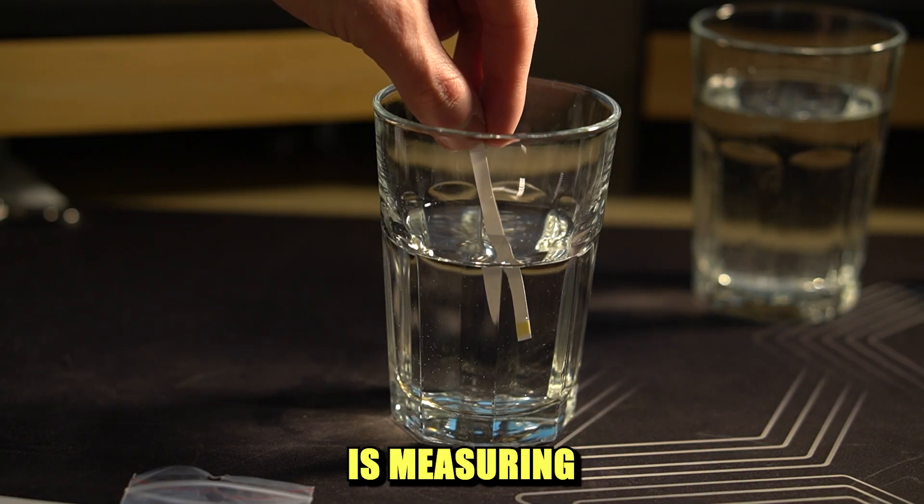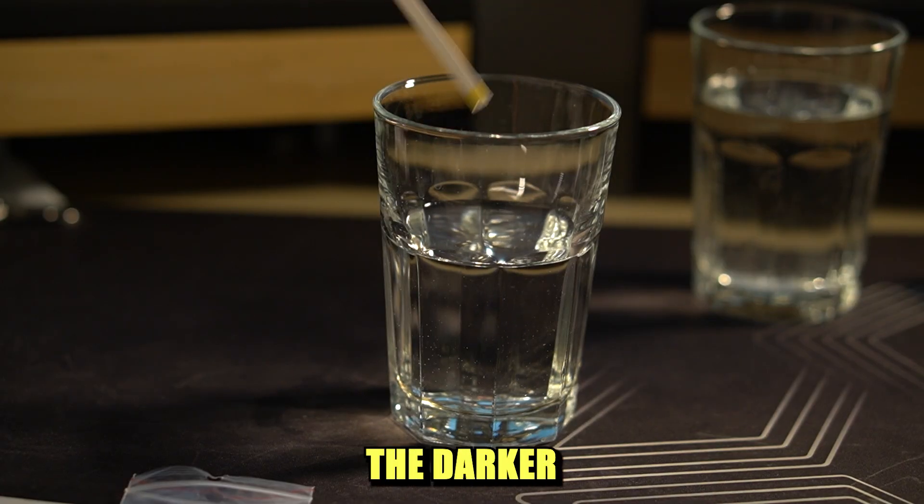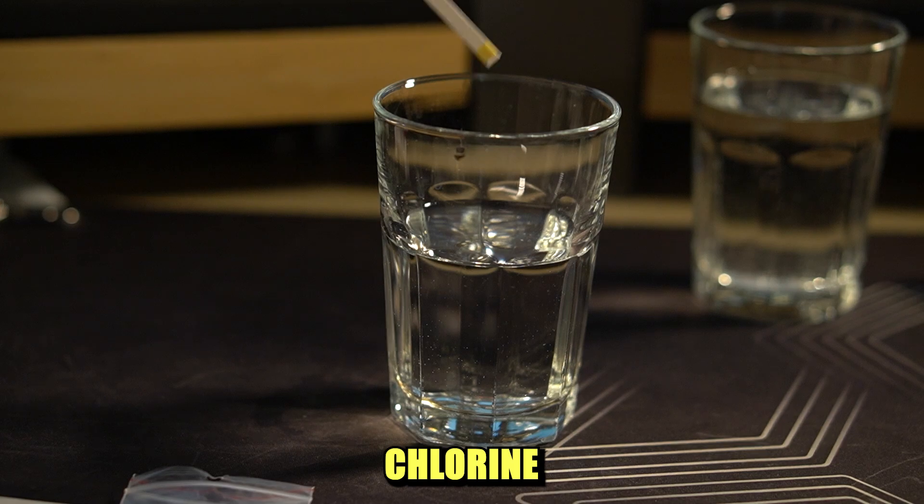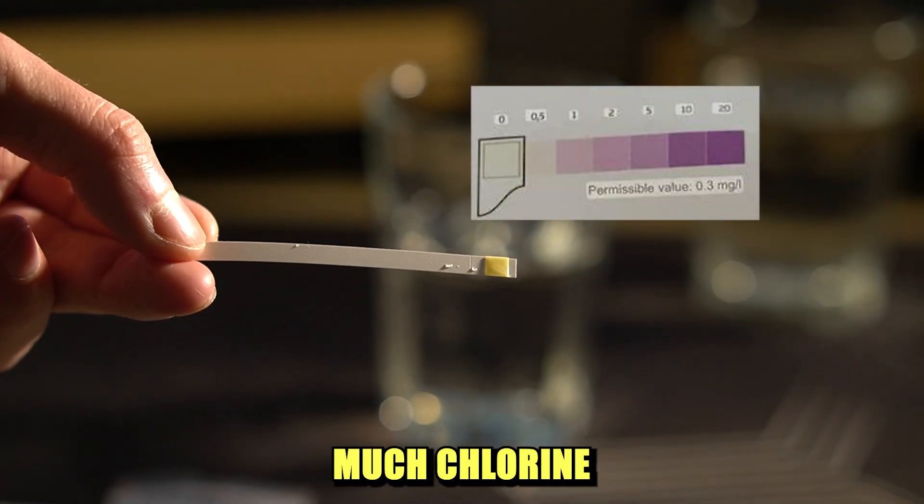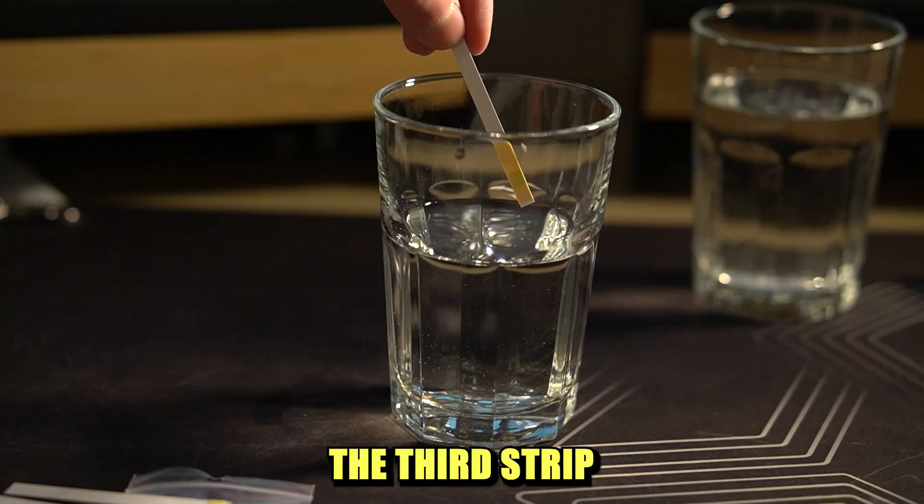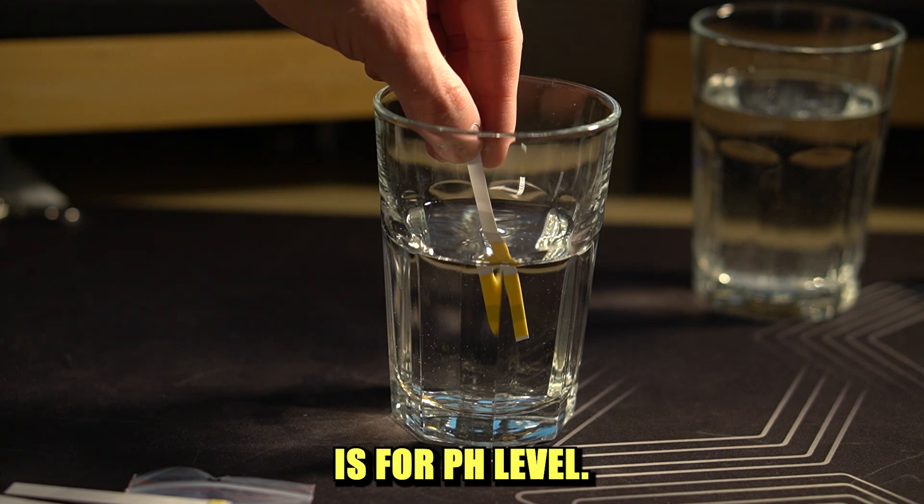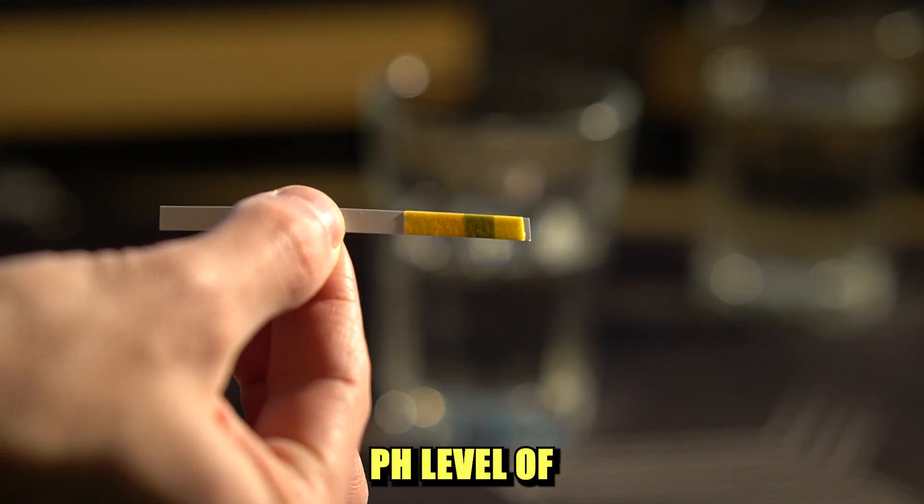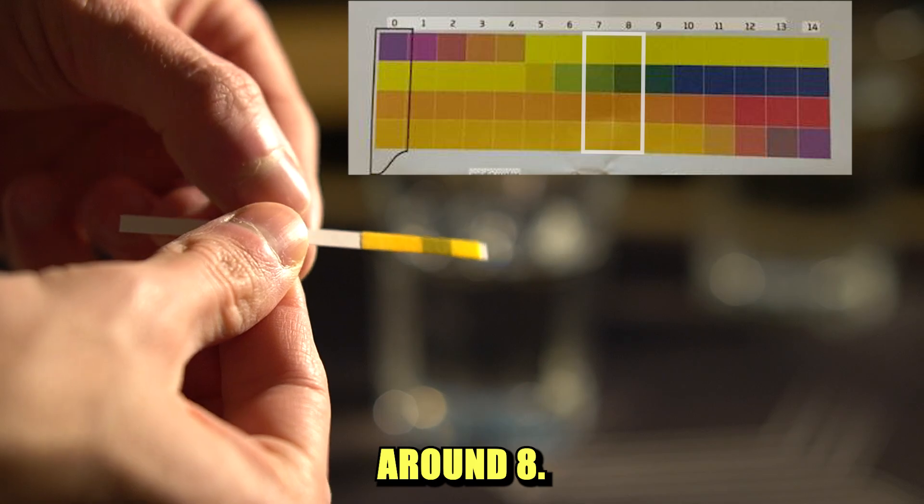The next strip is measuring the chlorine content. The darker the color of the strip, the more chlorine in the water. I don't see much chlorine showing up on the strip. The third strip is for pH level. It revealed that the baseline water has a pH level of around 8.